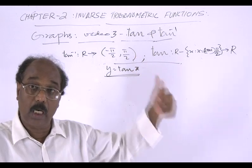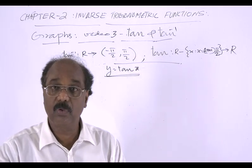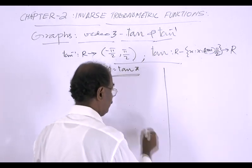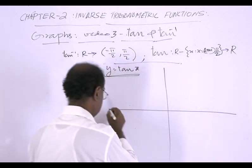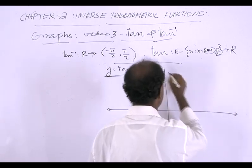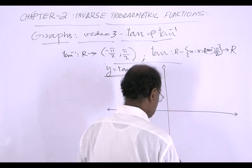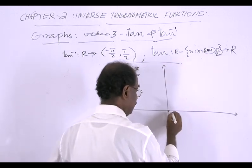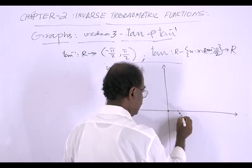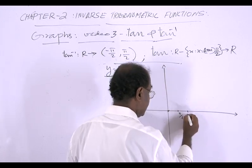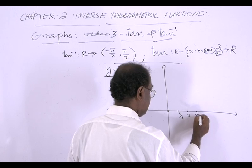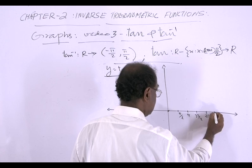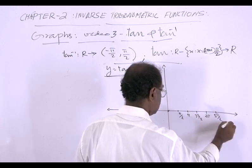To draw the graph, first draw two number lines — horizontal and vertical. Along the horizontal line, mark these points in the domain: 0, then π/2 which is excluded, then π, then 3π/2 which is an excluded point, then 2π, then 5π/2 which is excluded, et cetera.